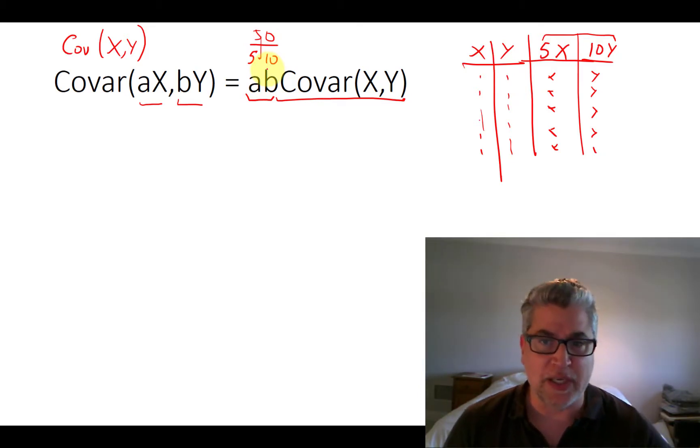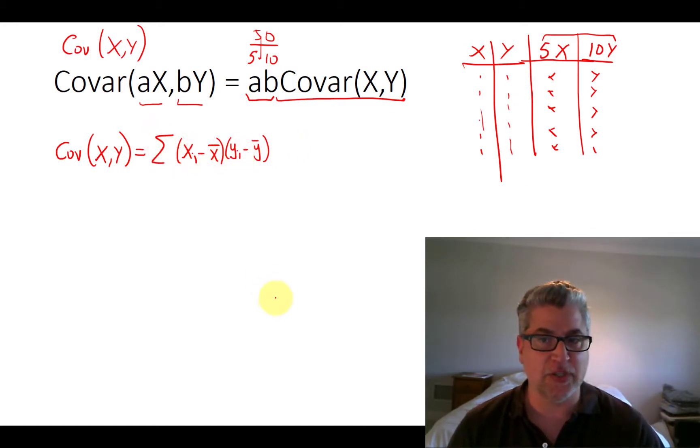Now the way to start all of these is to remind ourselves what the formula for covariance is. So the covariance between any two random variables, what you do is you take your first X, subtract off its mean, multiply that by the first Y minus its mean, and then you do that for all of our observations. And once you've done that, you divide by N.